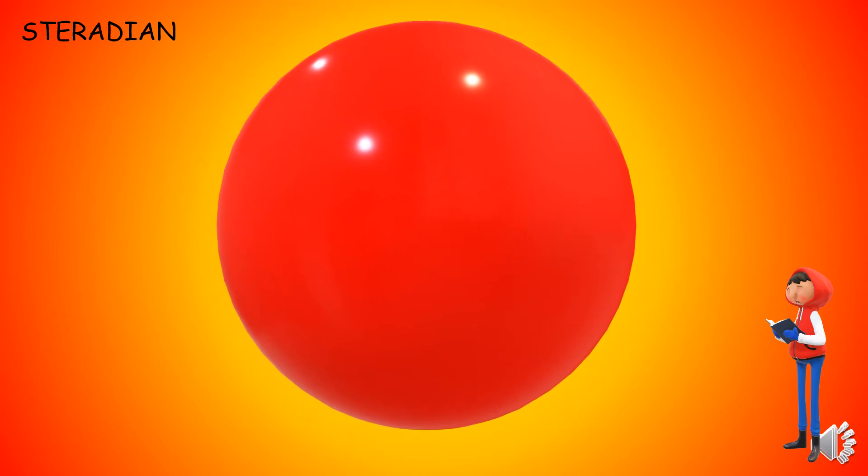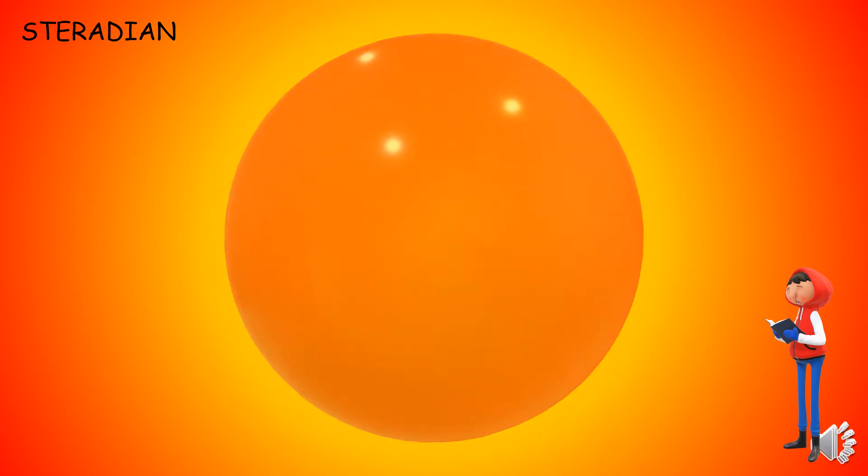To understand Steradian, consider a sphere as shown. This sphere has a center at point O and the radius is denoted by small r.